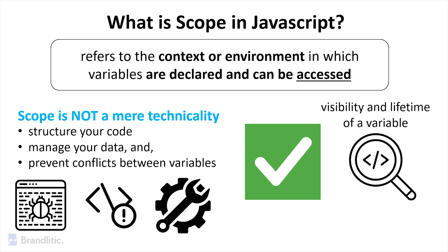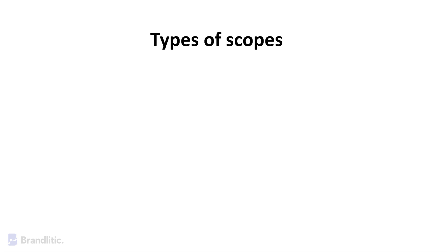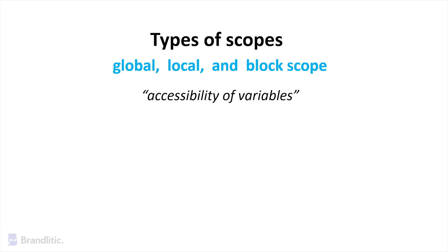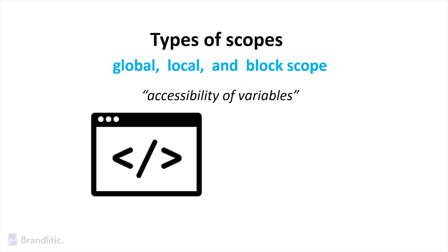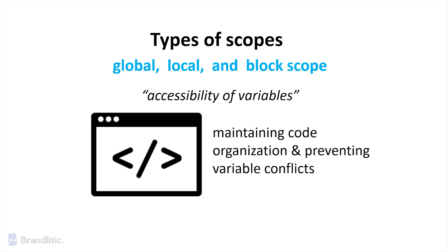JavaScript offers various types of scope, with three primary ones being Global, Local, and Block Scope. Each of these scopes controls the accessibility of variables in different parts of your code and plays a pivotal role in maintaining code organization and preventing variable conflicts.